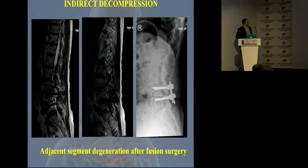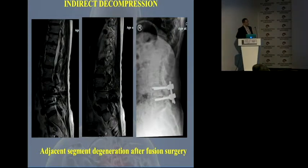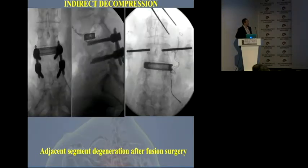The last case I have done was a girl who had been fused at L4-L5 ten years ago and developed adjacent segment disease. As you can see, the foramina are quite narrow. She had radicular pain and back pain. I went to the adjacent L3-L4 level and performed an XLIF approach there.